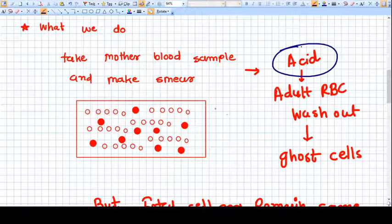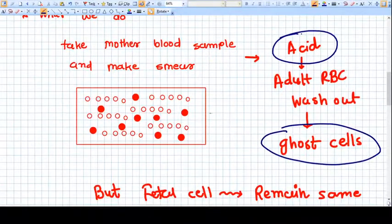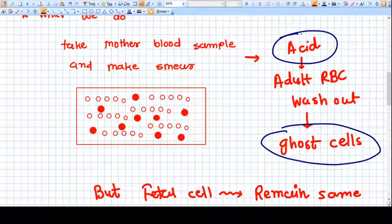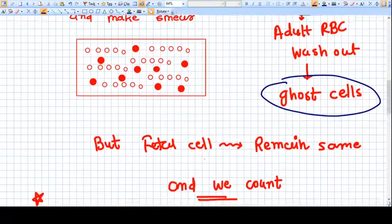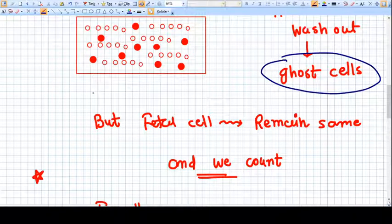The circles you are seeing here, the round circles, are actually the mother RBC or adult RBC from which the hemoglobin has already been washed out. They are called ghost cells. But the fetal cells have no such impact, they are as it is, so the fetal cells are seen in the very red circles.